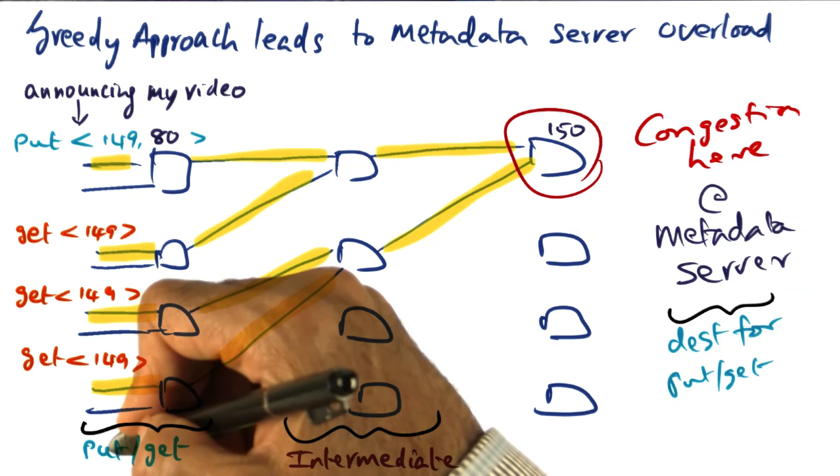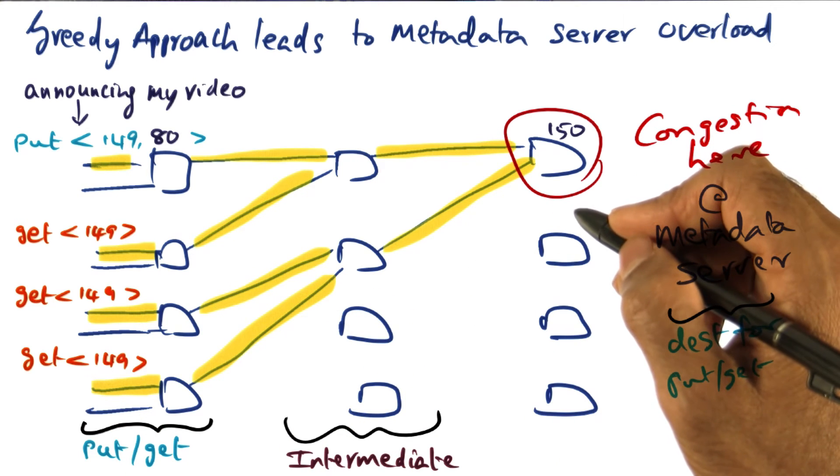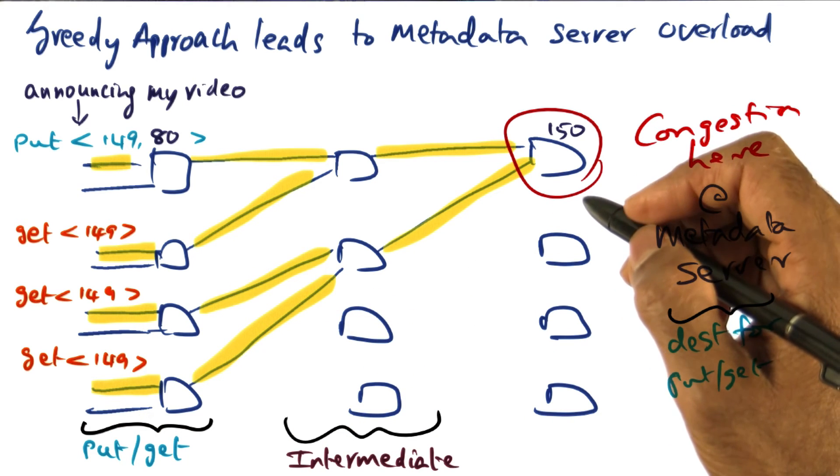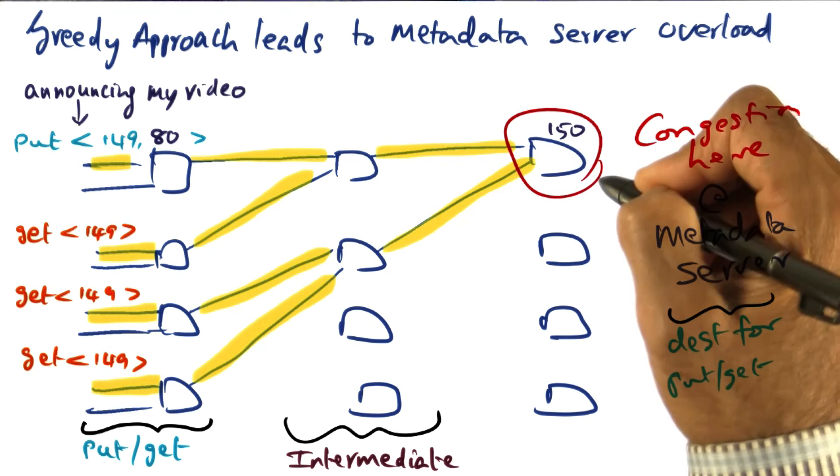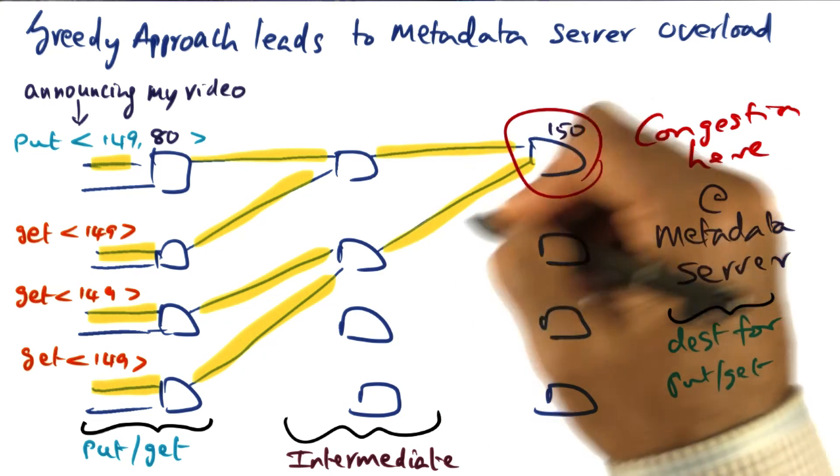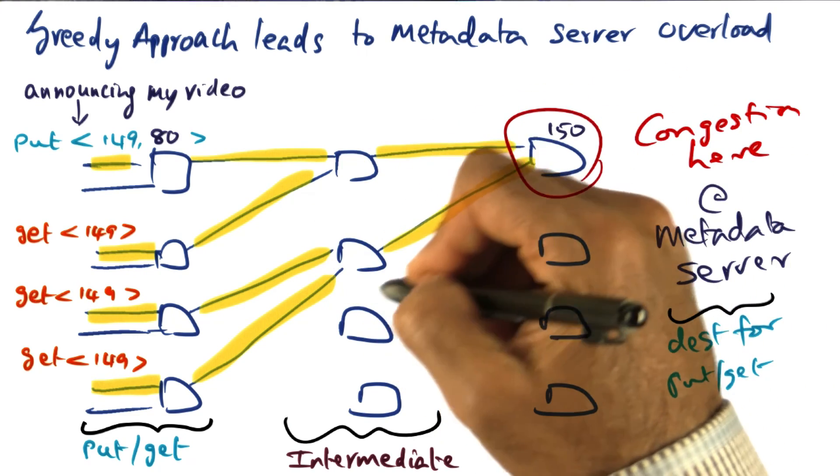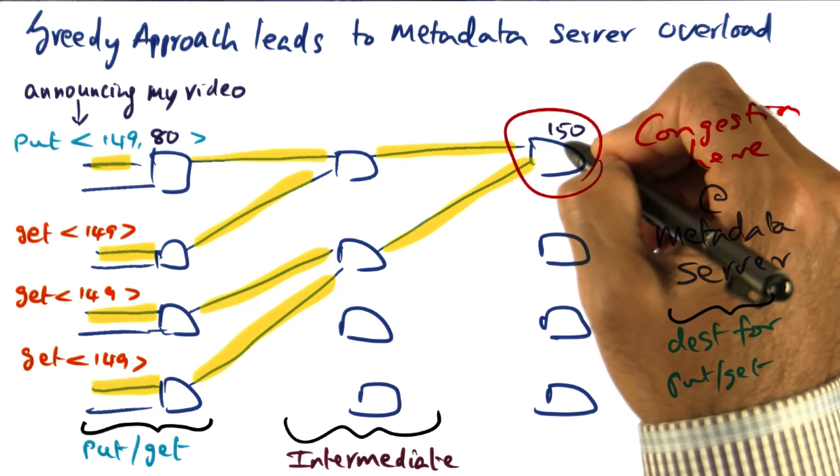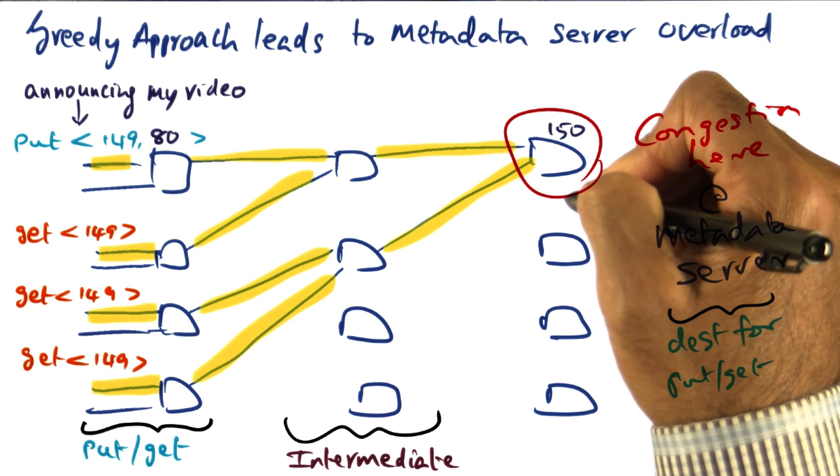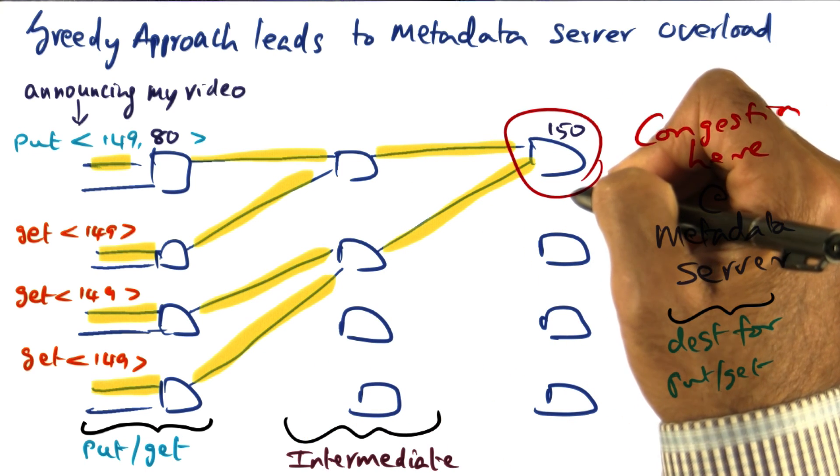And the combination of these puts and gets result in what I call the tree saturation problem, the tree being rooted at the congested node and affecting all the nearby nodes in the overlay network because they are the gateway to get to this node that contains this particular key-value pair.